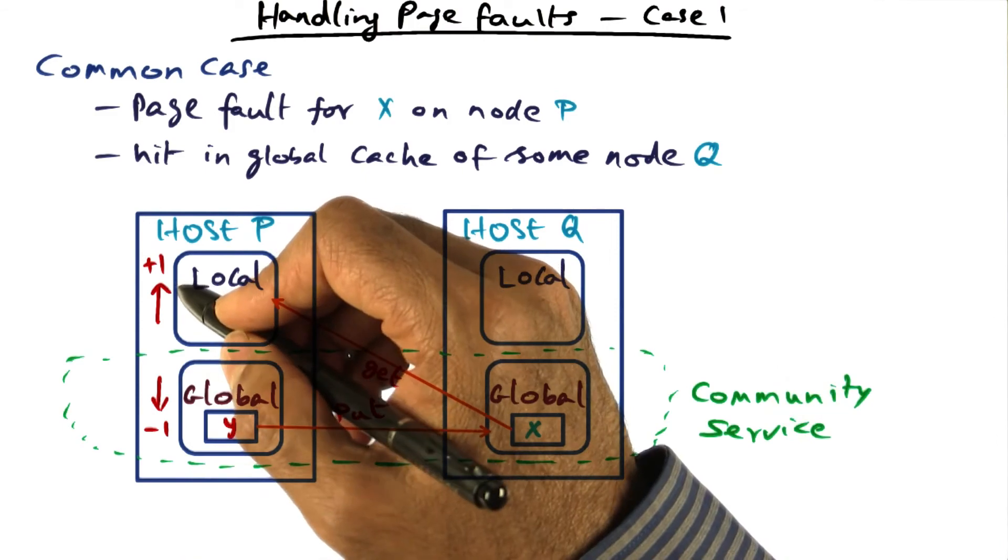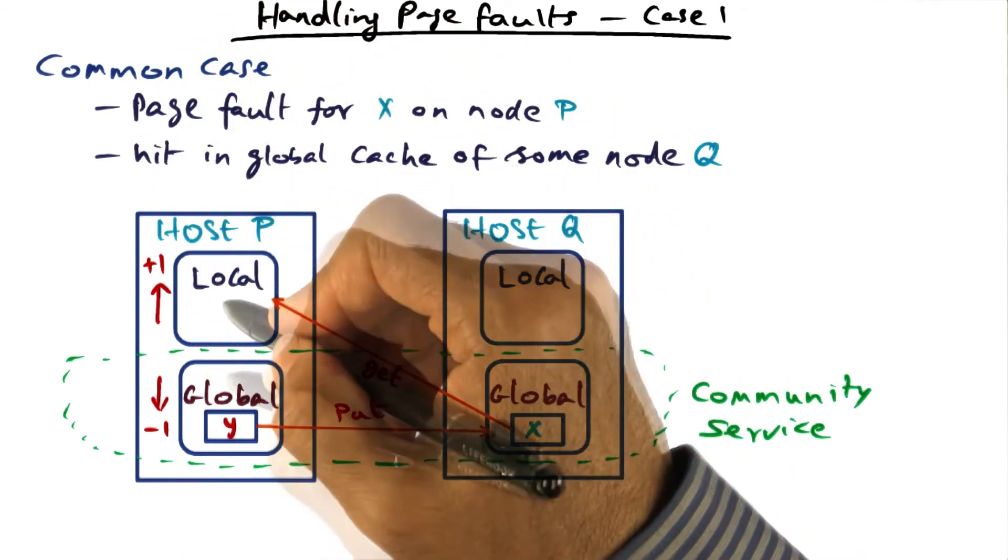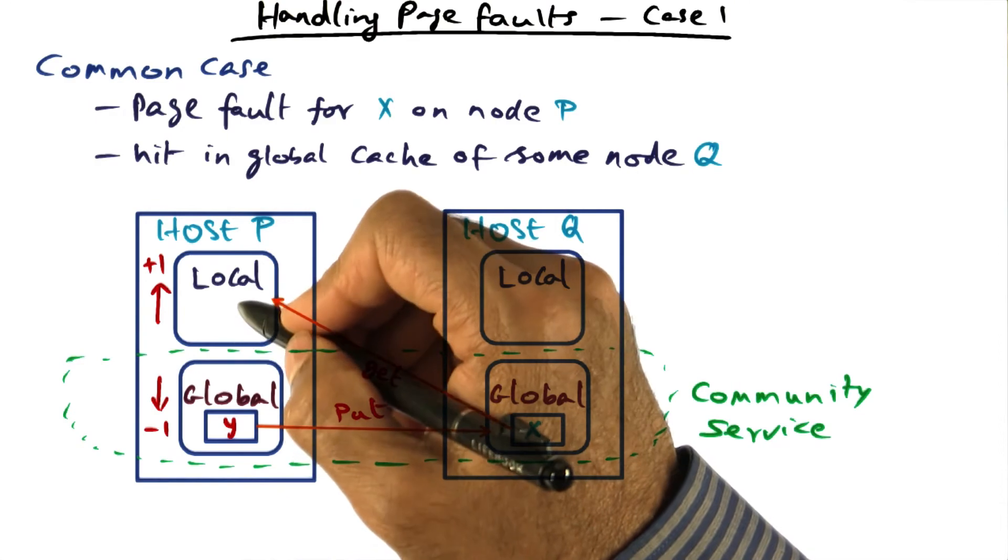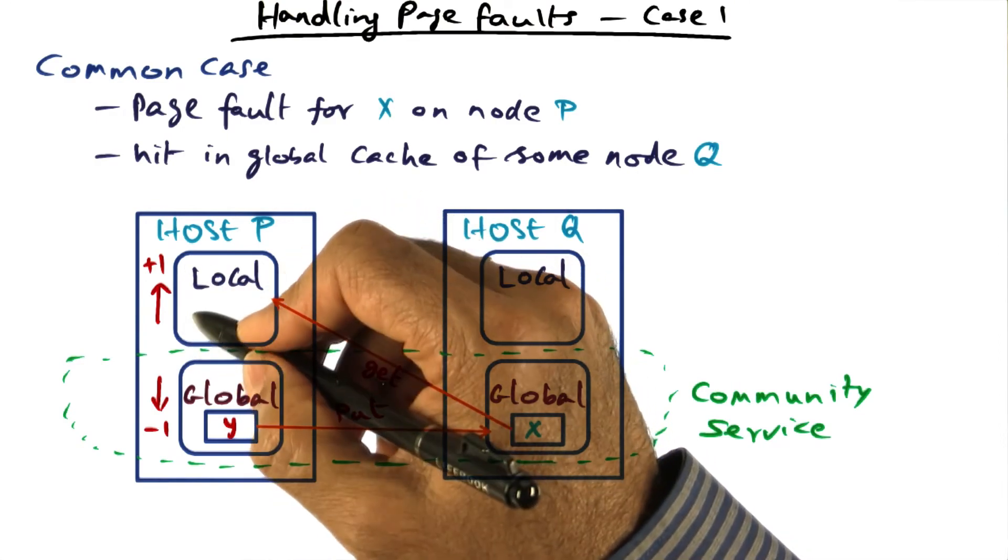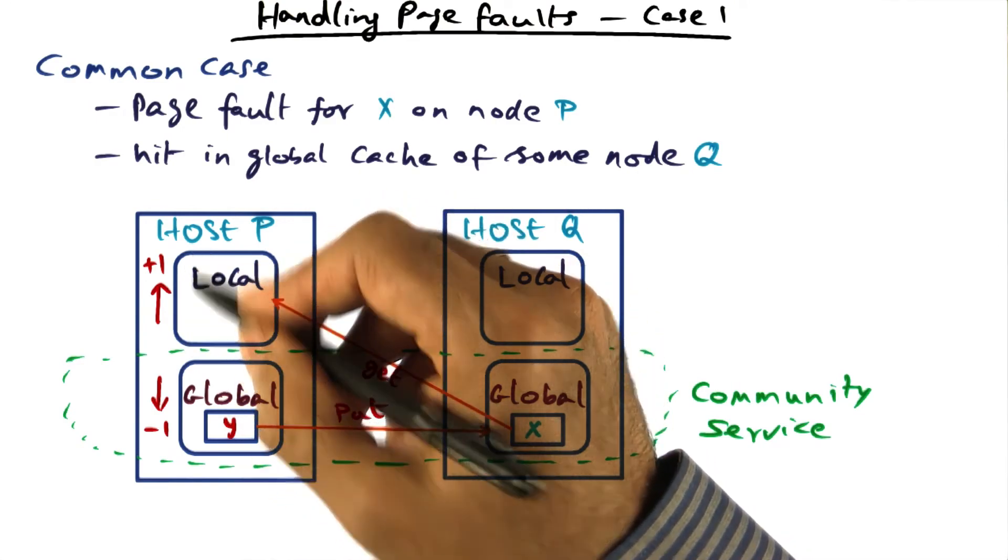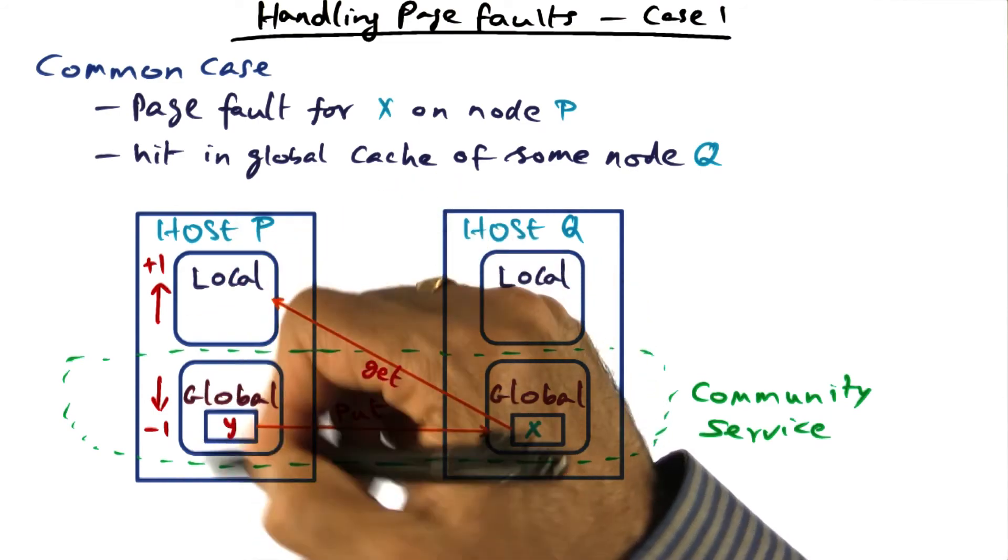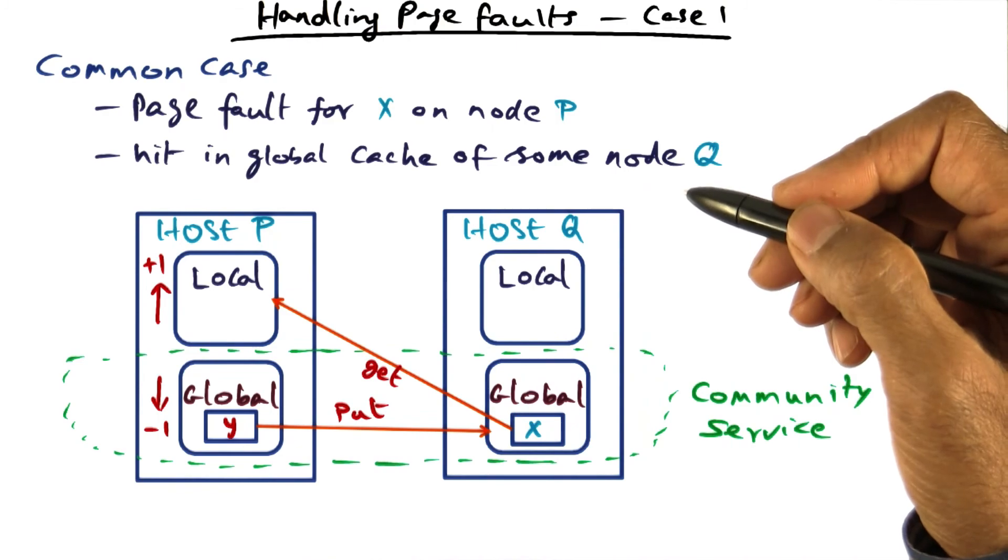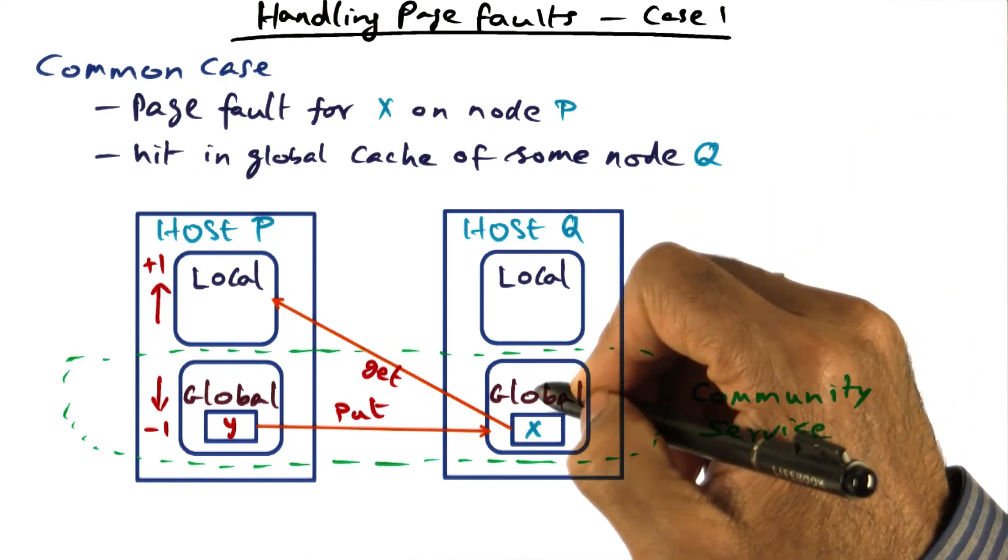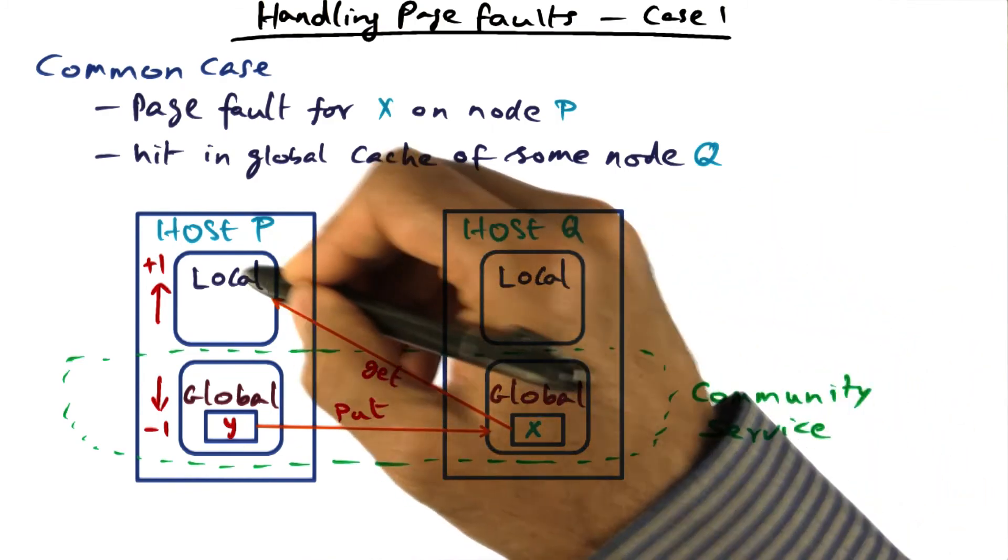The key takeaway for you is that for this particular common case, the memory pressure on P is increasing. So the local allocation of the physical memory goes up by one. And the global allocation, the community service part goes down by one on host P, whereas on host Q, it remains unchanged because all that we have done is we have traded Y for X.